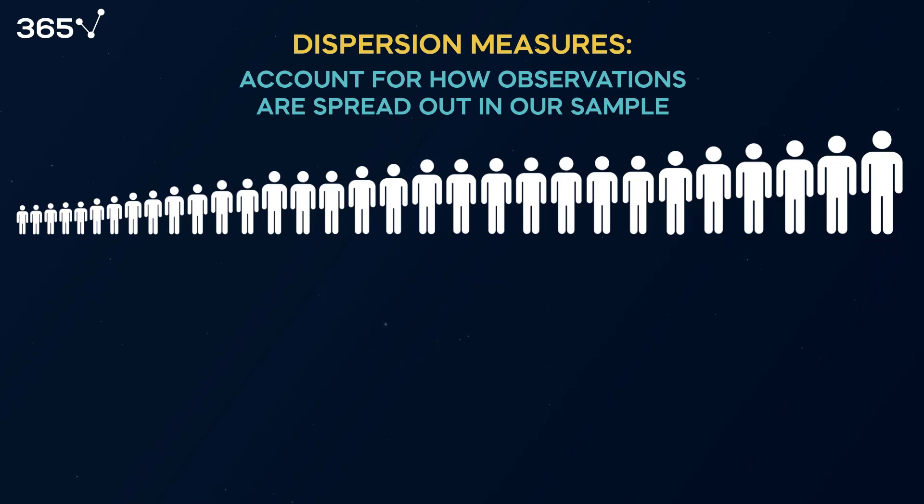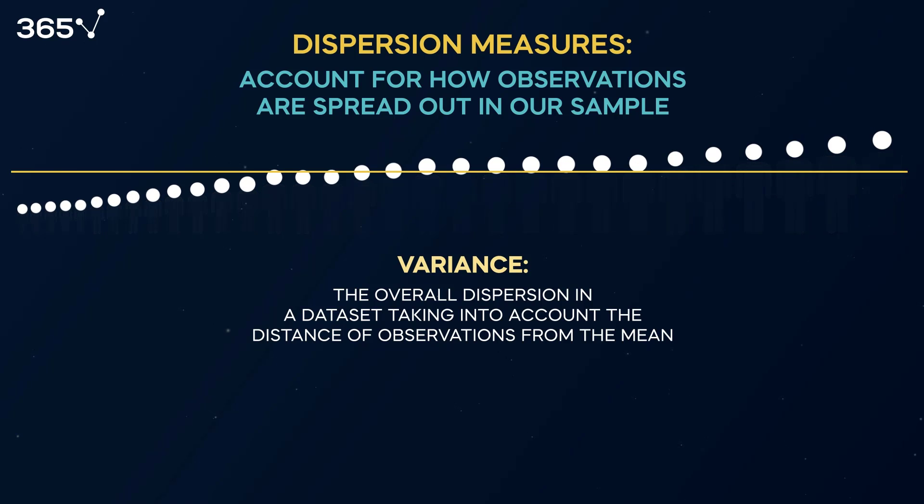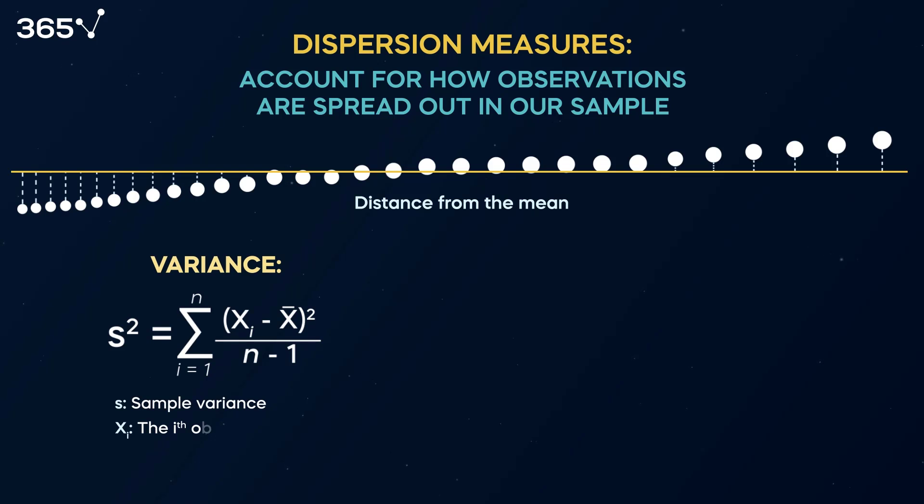A more popular and frequently used metric of dispersion is variance. Variance better represents the overall dispersion in a dataset because it considers an observation's distance from the mean. Note the formula for sample variance. It asks us to sum the squared difference between each individual's height and the mean. This sum is divided by the number of observations in the sample minus 1. We subtract 1 because we're dealing with sample data, and this requires an adjustment since the sample formulas are the unbiased estimators of the population formulas. I know this sounds odd, but we must bear it in mind when working with sample data.